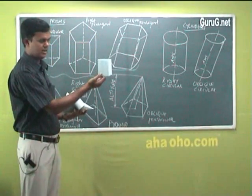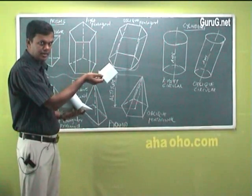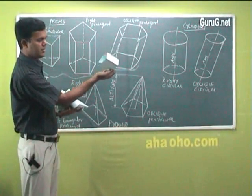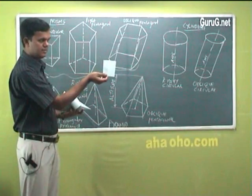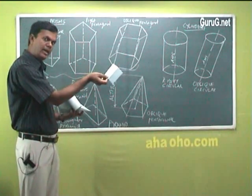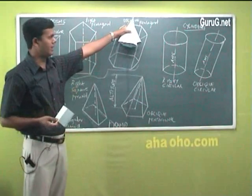If this axis of the pentagon is slightly inclined—you can hold the pentagon like this or anywhere—if it is slightly inclined to any angle, either to HP or VP, that becomes oblique.